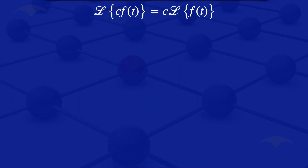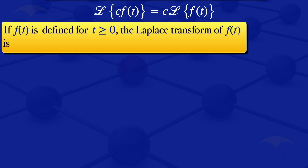Starting with the first one: the Laplace transform of C multiplied by F of T equals C multiplied by the Laplace transform of F of T. To prove that, we use the definition. By definition, if F of T is defined for T greater than or equal to zero, the Laplace transform of F of T, denoted by F of S, is the integral from zero to infinity of e to the minus ST times F of T dT.